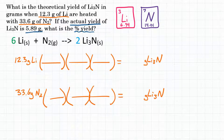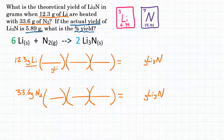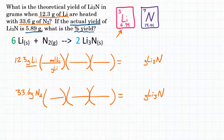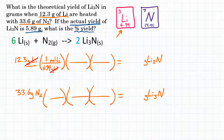Because this is a limiting reactant problem, we're only going to use whichever answer is less. For the first problem, we're starting with grams of lithium. We need to get rid of that, so it goes on the bottom of our first conversion factor, converting grams to moles of lithium. The molar mass of lithium from the periodic table is 6.94, so one mole equals 6.94 grams. This cancels units of grams of lithium, leaving us with moles of lithium.